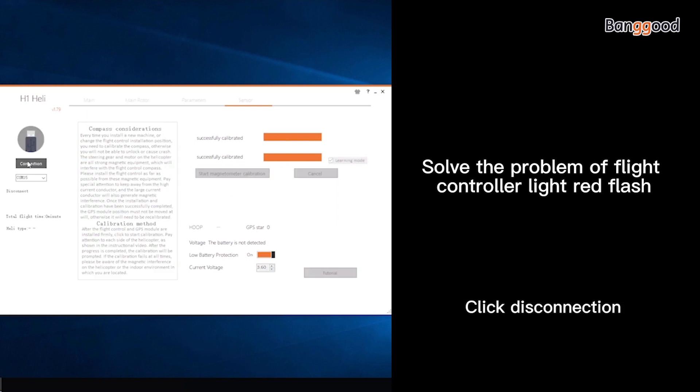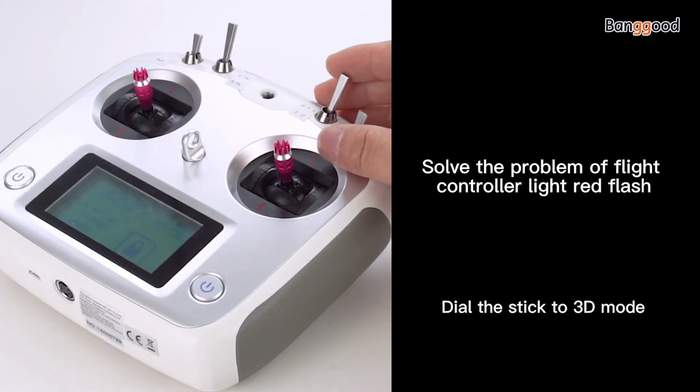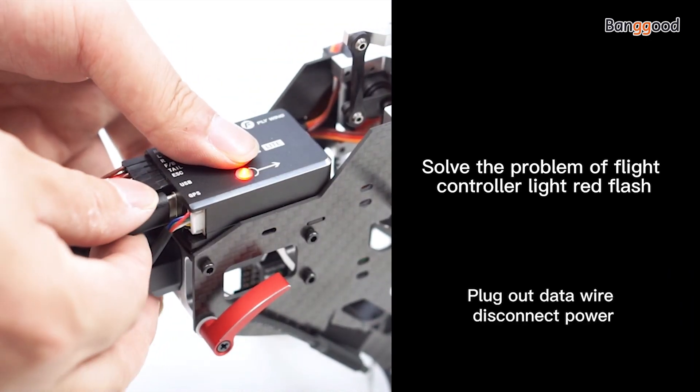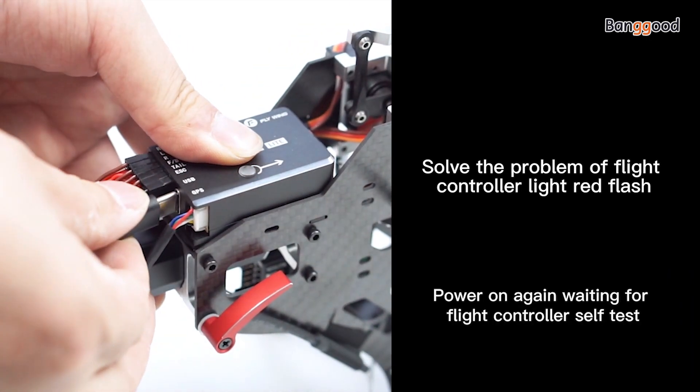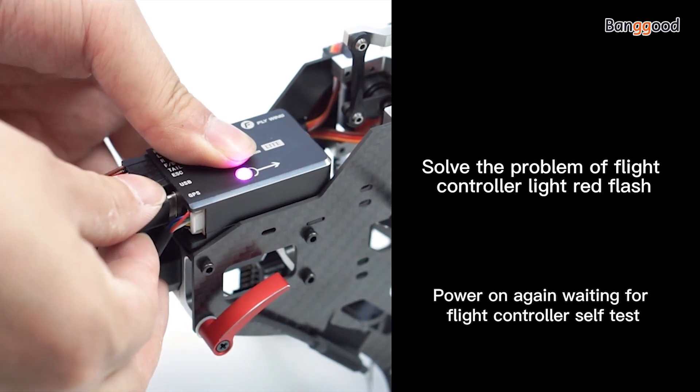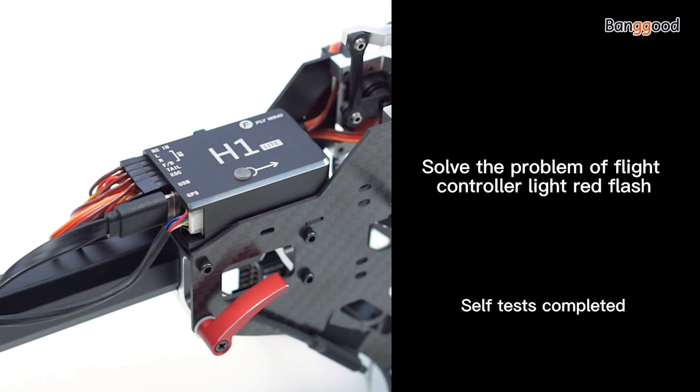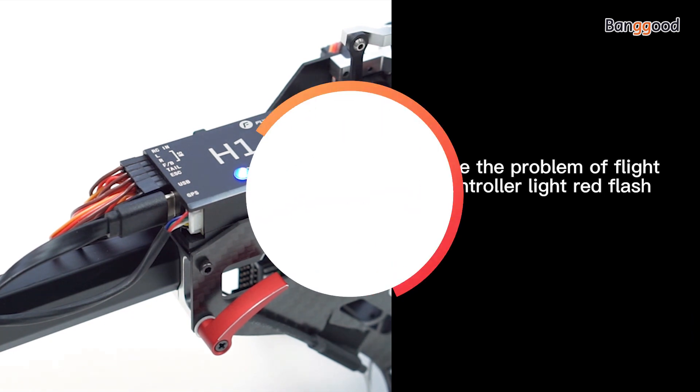Click disconnection. Deer the stick to 3D mode. Plug out data wire. Disconnect power. Power on again. Waiting for flight controller self-test. Self-test complete. Flight controller blue light.